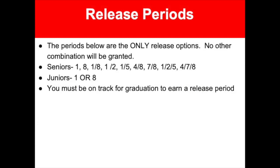Juniors and seniors who are on track for graduation may request a release period in their schedule. The periods listed are the only release options — no other combinations will be granted. Seniors can request up to three periods of senior release. Juniors may request one period of senior release, either first or eighth period. Students who have a release period are expected to be off campus during their release period, so it is essential they have transportation once their release period starts.